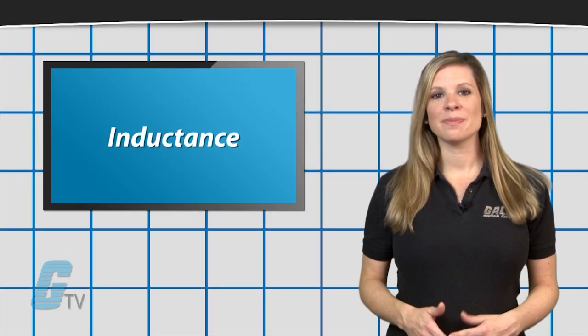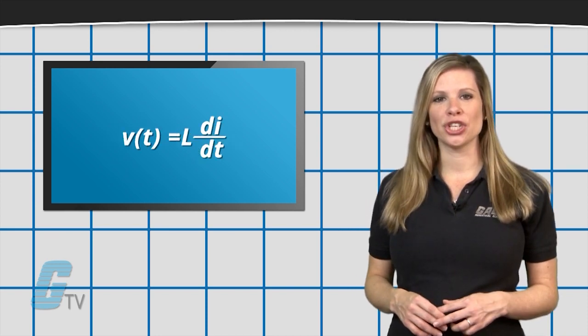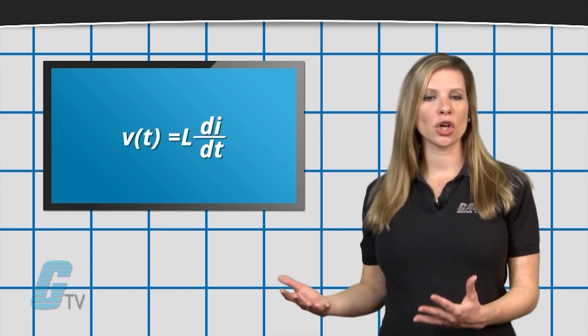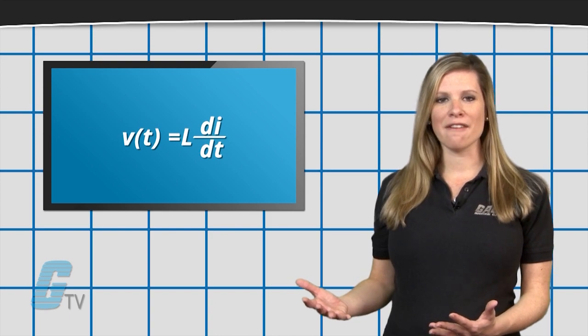An inductor is characterized by its inductance, the ratio of the voltage to the rate of the change of current, which has units of Henrys.